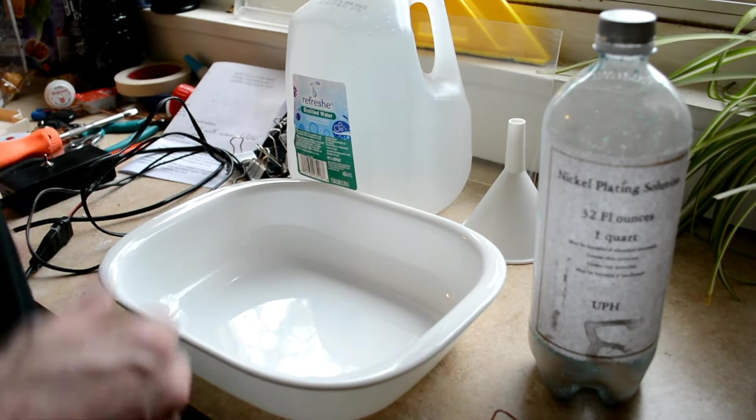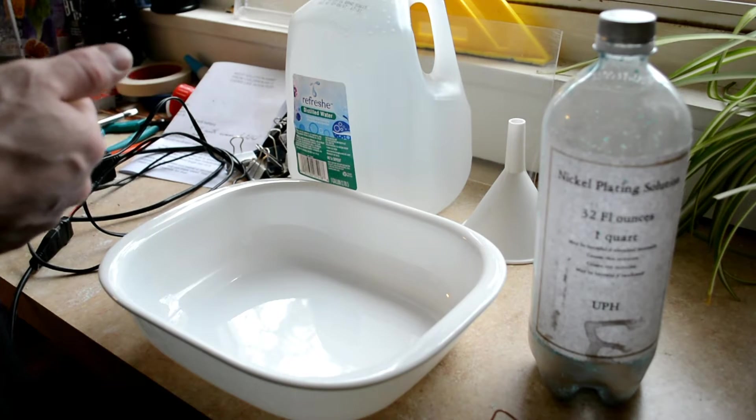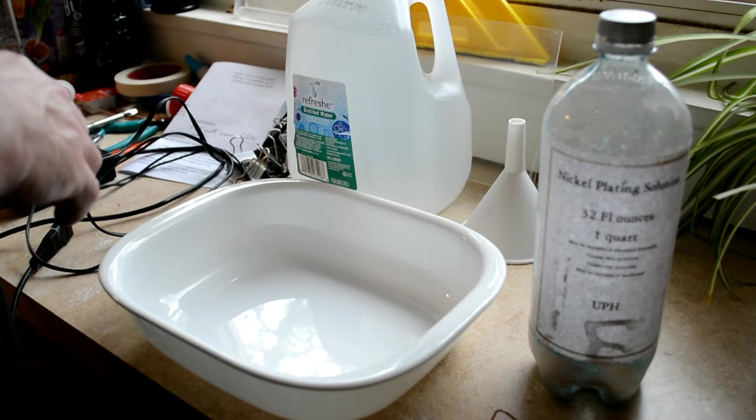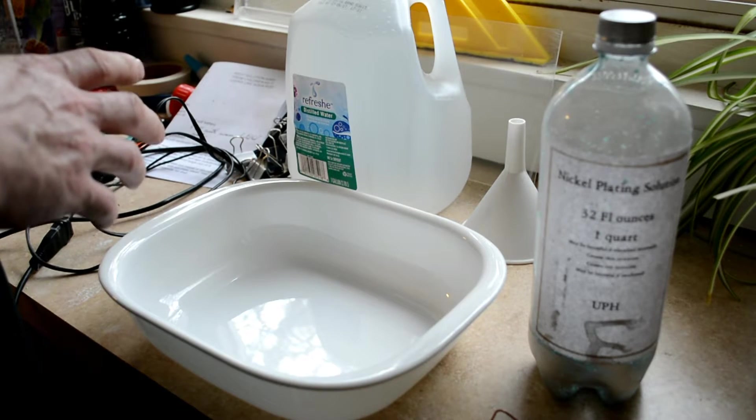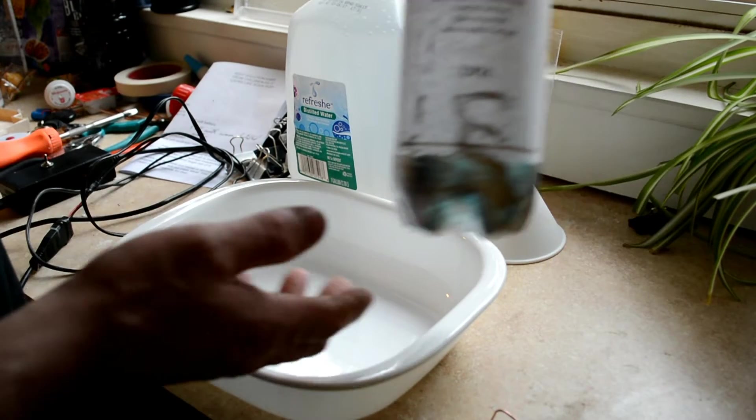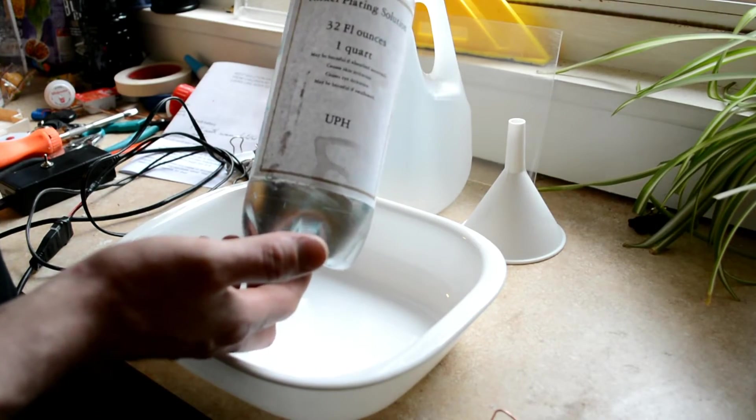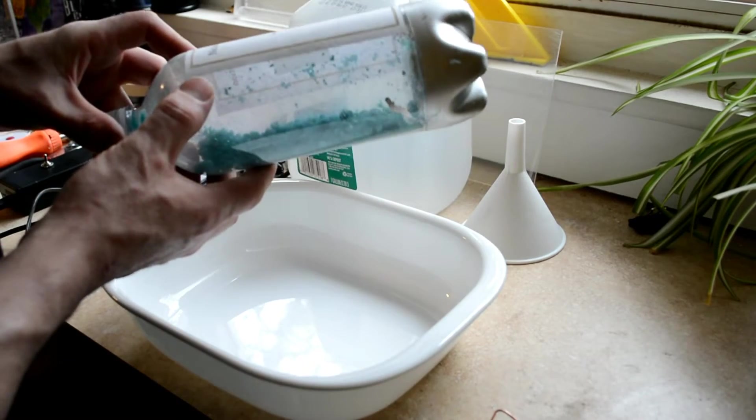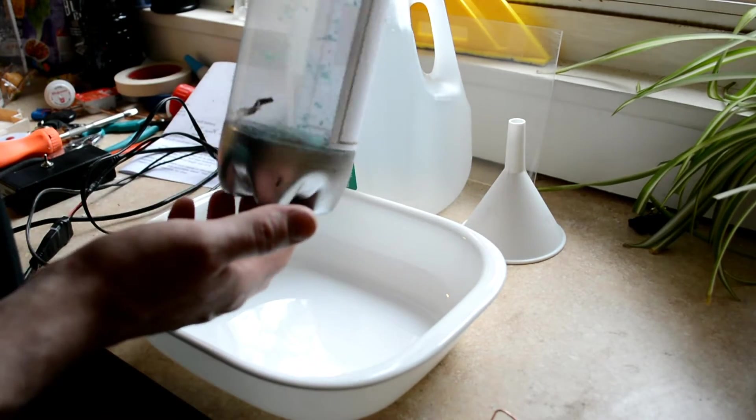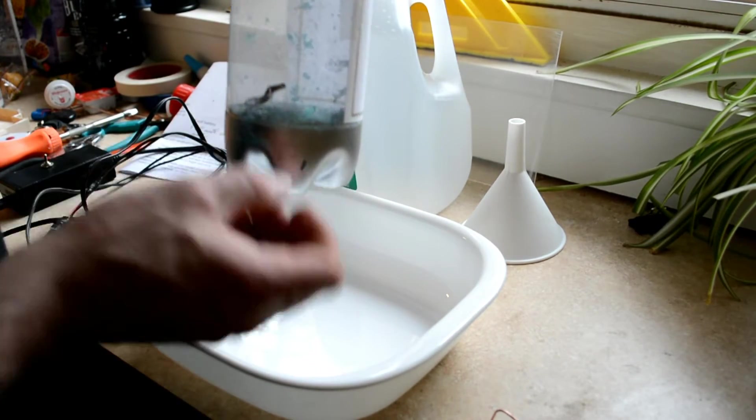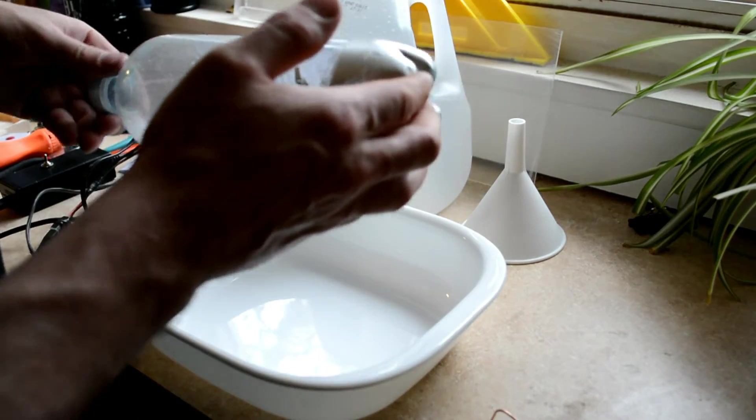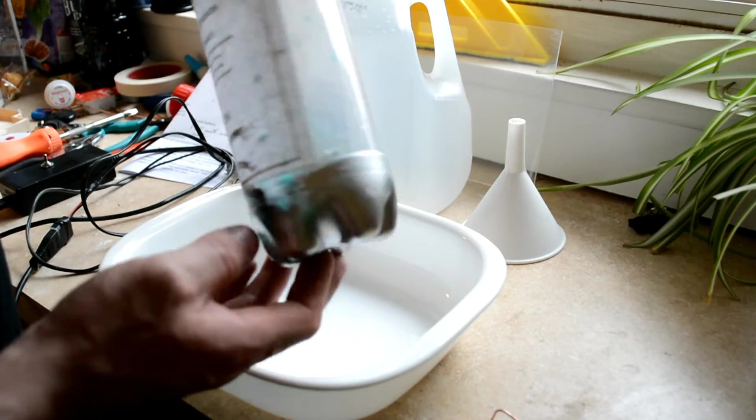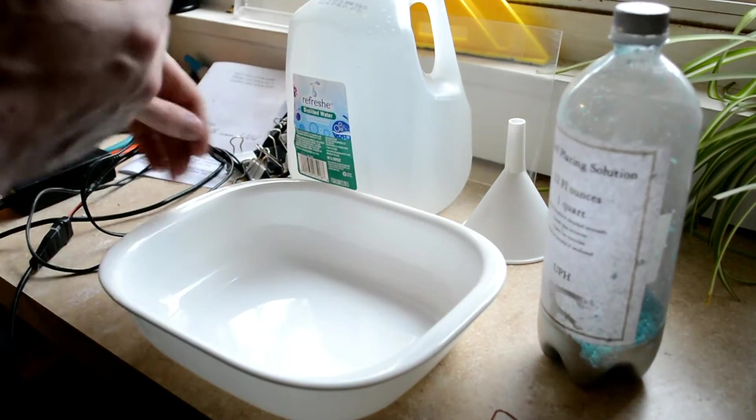What I did was on the Instructables website they show you how to make your own nickel plating solution. However, I took it to eBay and I actually found this stuff on there. This is 35 bucks, comes in a crystal form. It's basically the nickel plating solution that you need, dehydrated. You basically mix it with some clean distilled water and then you get your solution.